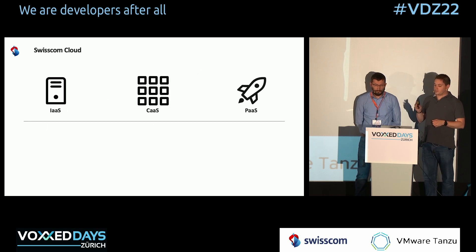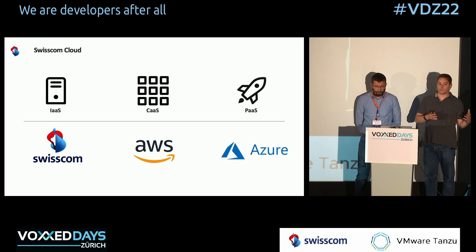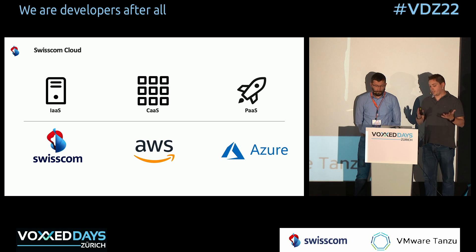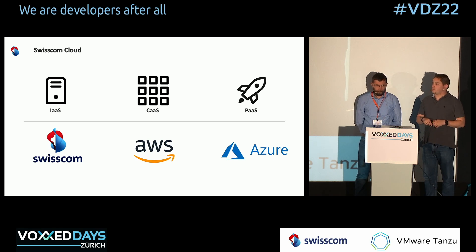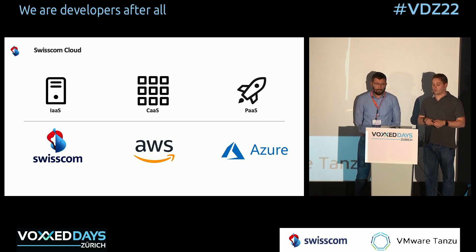Next to these services, we provide additional things on our own infrastructure in Swisscom data centers located in Switzerland, operated within Switzerland. But we also have a variety of services on top of AWS and Azure that we provide to our customers.